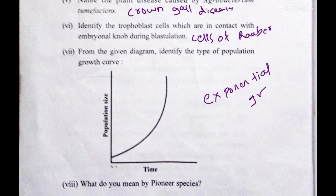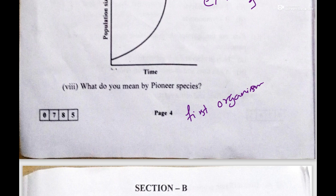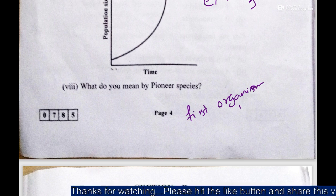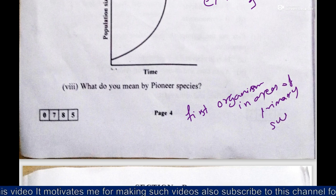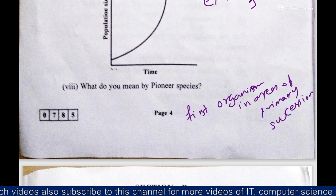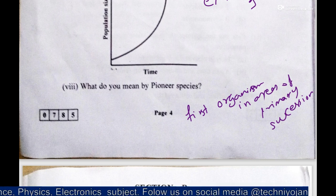The last question: what do you mean by pioneer species? The answer is the first organism or species that occurs in areas of primary succession — i.e., the first organism responsible for initiating primary succession.